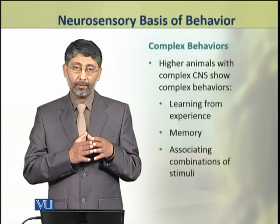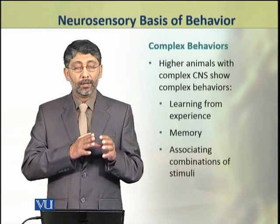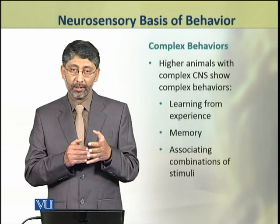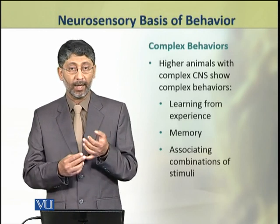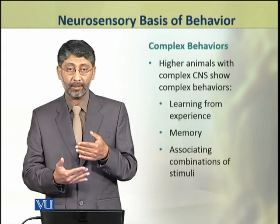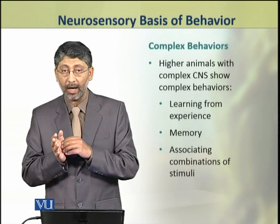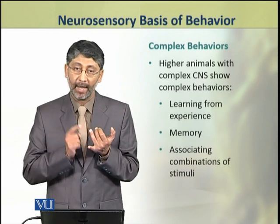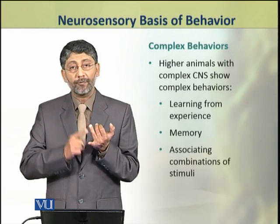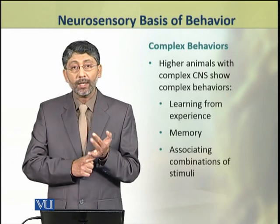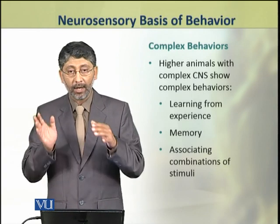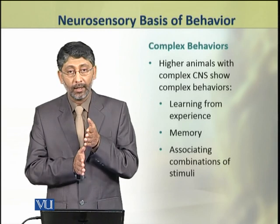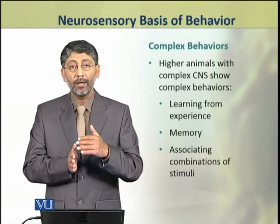Higher animals with a complex central nervous system show complex behaviors due to a developed neural circuitry. For example, learning from experience, keeping memory of events, associating combinations of stimuli, and deriving specific outcomes from those associations — these are all complex behaviors based on neural processing.